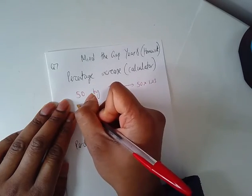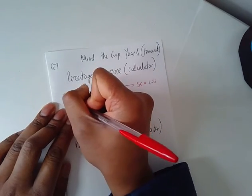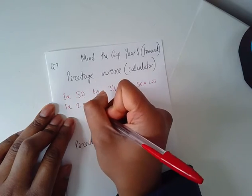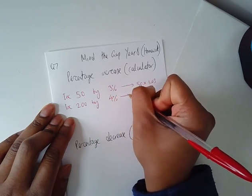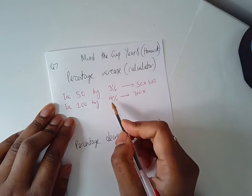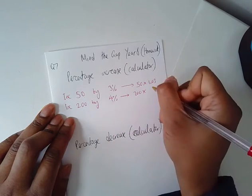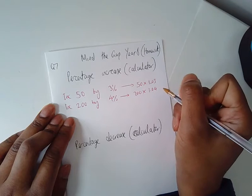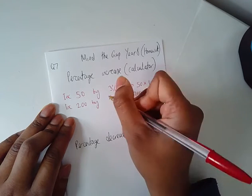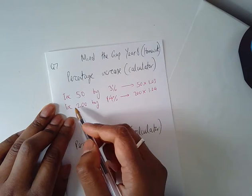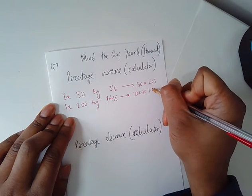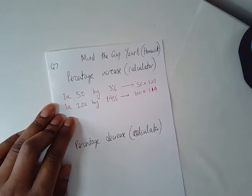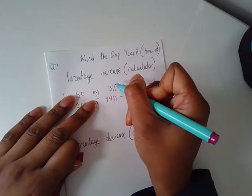If I want to increase 200 by 4%, I would do 200 times 1.04. If it was 14% increase, 200 by 14%, it'll be 1.14. So hopefully you can see where these numbers are coming from.